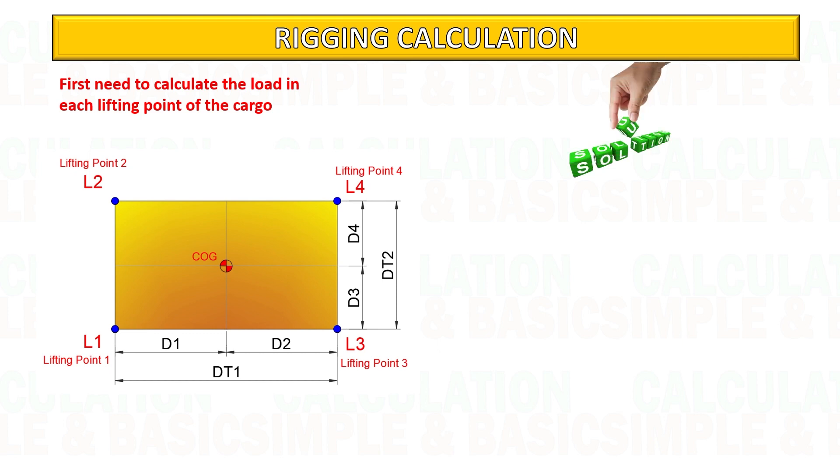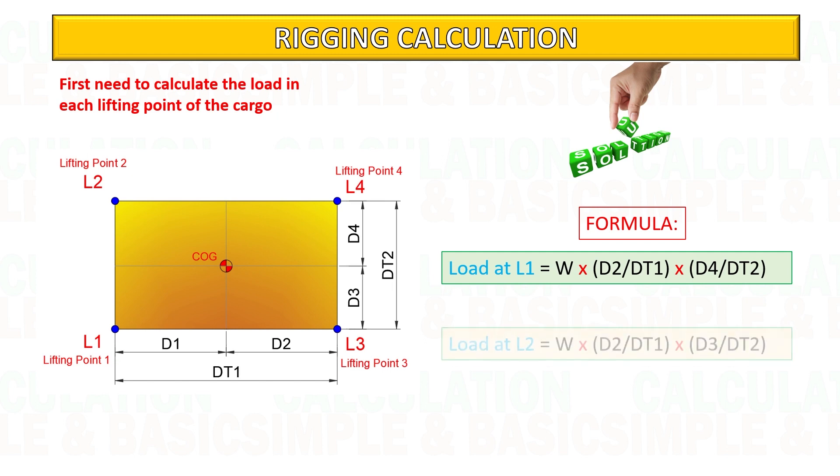Before calculating the tension in each sling you need to calculate first the load in each lifting point of the cargo. This is the formula how to get the load in each lifting point.